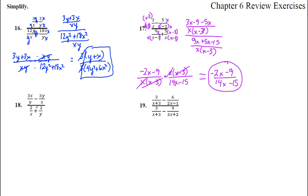We have 3x minus 3y over 2, over y, minus 3y over x, over 2 over x plus 2 over y. Common denominator in the top looks like just x times y. So we times by x and x, y and y — now those have common denominators. We have 3x squared minus 3y squared all over xy. That's the top fraction.